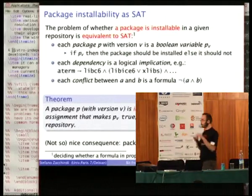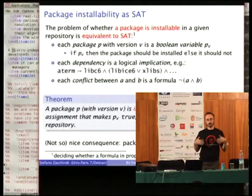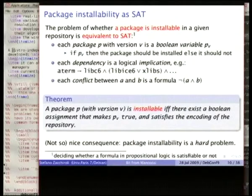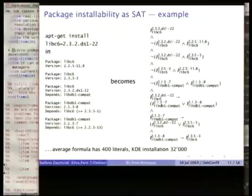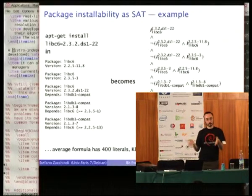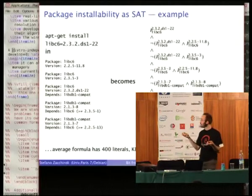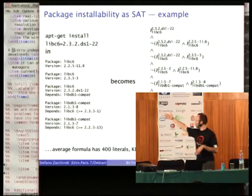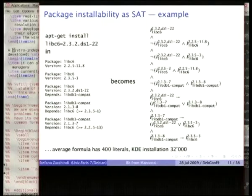A not-so-nice consequence of this mapping is that deciding whether a package is installable or not becomes an NP-complete problem, which is well known to be really hard and requiring exponential complexity in the size of the archive — and we have 20,000 packages. Luckily, all instances we face in reality are quite easy to solve. If we think of the problem of installing a specific package in a given repository like the one shown, you get a big formula which is satisfiable only if a given package manager has a way to install that package. For example, if you try to install a KDE package and look at the corresponding formula, you get a formula with something like 32,000 literals — really a big object, even if it is usually easy to solve.